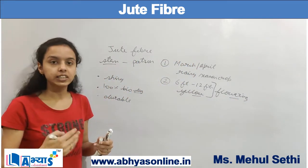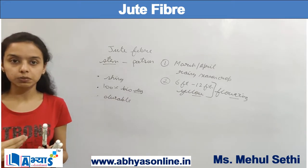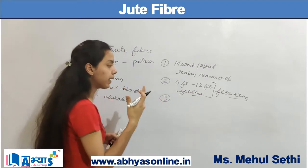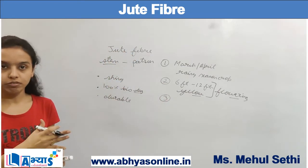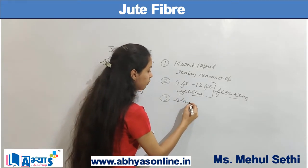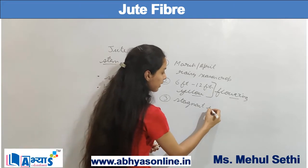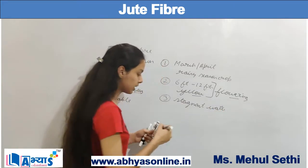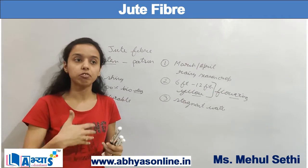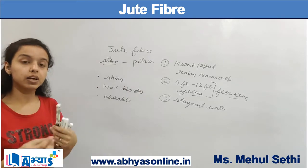After harvesting the plant in the flowering stage, we make bundles of the fiber and dip these bundles into stagnant water — basically a pond. When the bundles are dipped in the pond for about a week or a few days, the fibers start to separate out and become very loose.